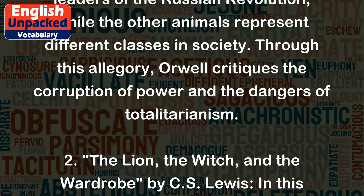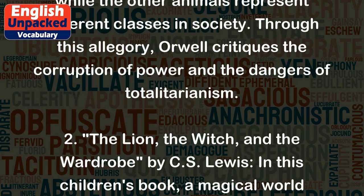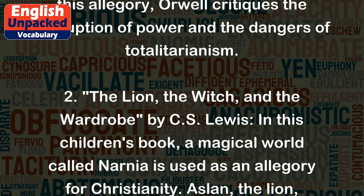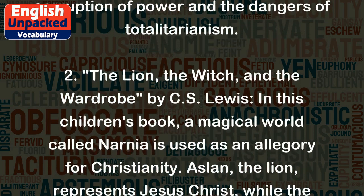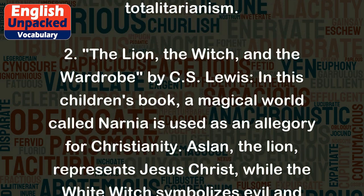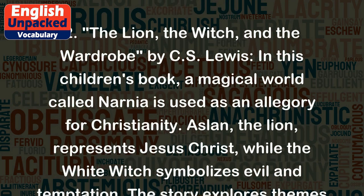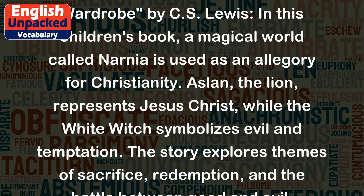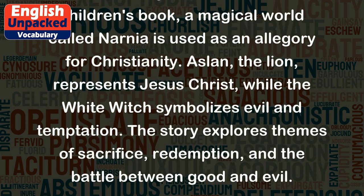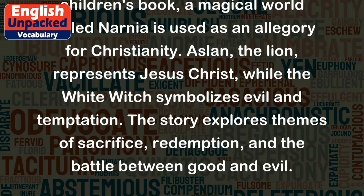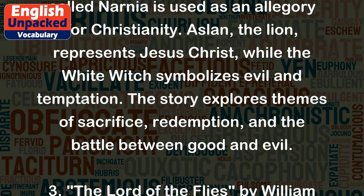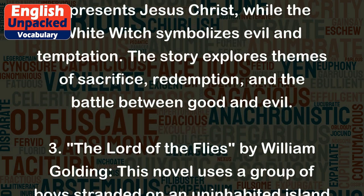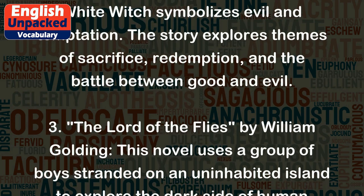2. The Lion, the Witch, and the Wardrobe by C.S. Lewis. In this children's book, a magical world called Narnia is used as an allegory for Christianity. Aslan, the Lion, represents Jesus Christ, while the White Witch symbolizes evil and temptation. The story explores themes of sacrifice, redemption, and the battle between good and evil.